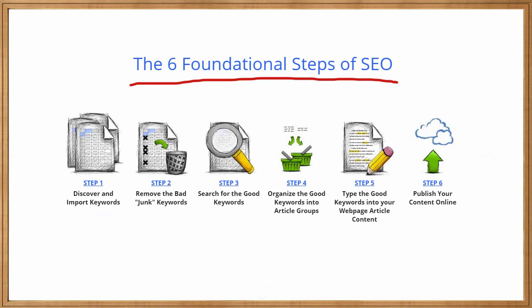Our primary goal in SEO — search engine optimization — is to optimize our website for the search engines, namely Google. People in the world type keywords into Google and we hope that these people will land on our website. So our first goal in SEO is to discover or import the keywords that these people are actually typing into their web browser.